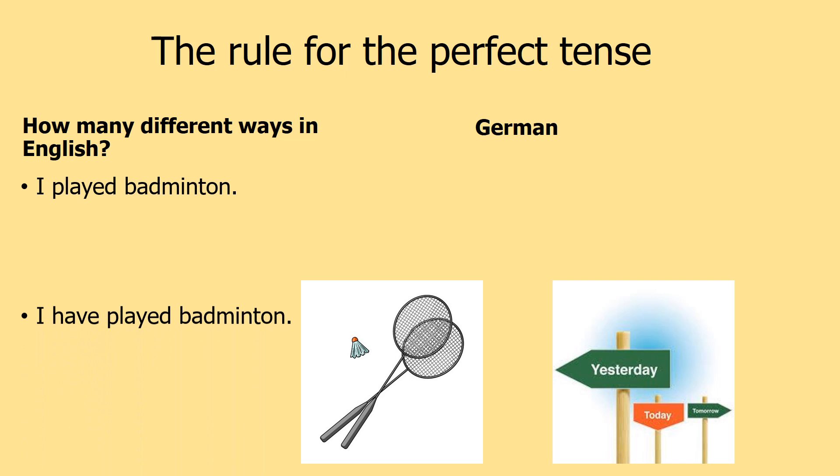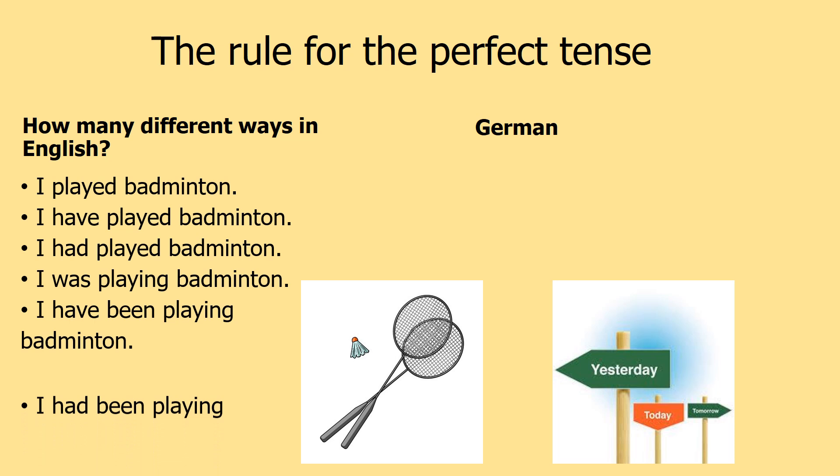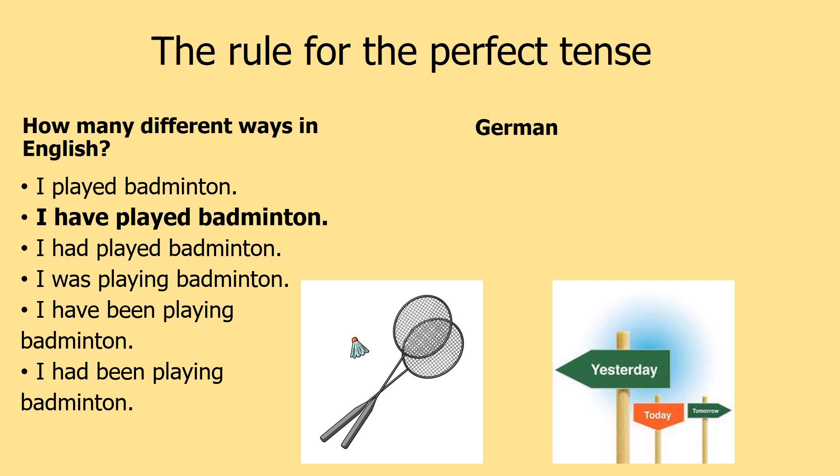We've got: I played badminton, I have played badminton, I had played badminton, I was playing badminton, I have been playing badminton, and I had been playing badminton. We don't use all of those in everyday life — most of us would just say I played badminton yesterday. In German, we're going to look at the simple form of the perfect tense, which corresponds with 'I have played badminton.'